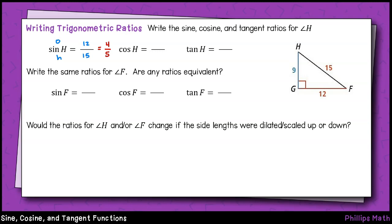For cosine of H, that is defined as the adjacent side divided by the hypotenuse. For this triangle, that will be 9 over 15, or 3 fifths simplified.